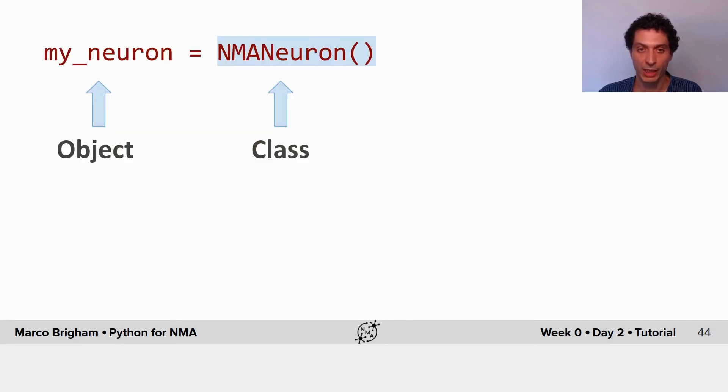Now that we've defined our class, we instantiate it. So my_neuron is an object of class type NMANeuron.